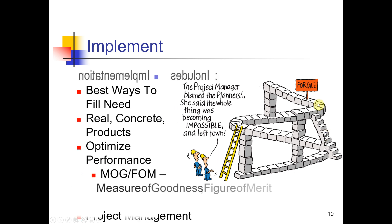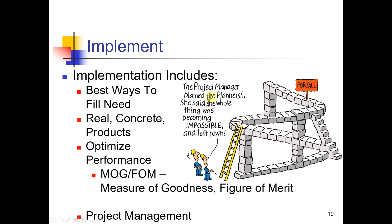Implementation. The project manager blamed the planner. She said the whole thing was becoming impossible and left town—the Escher diagram. Implementation: best way to fill the need that you identified in your problem formulation phase. You make something real, concrete. You optimize performance.